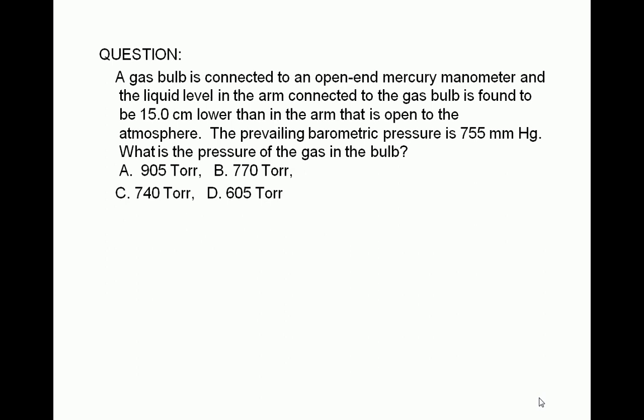A gas bulb is connected to an open-end mercury manometer and the liquid level in the arm connected to the gas bulb is found to be 15.0 centimeters lower than in the arm that is open to the atmosphere. The prevailing barometric pressure is 755 millimeters mercury. What is the pressure of the gas in the bulb?